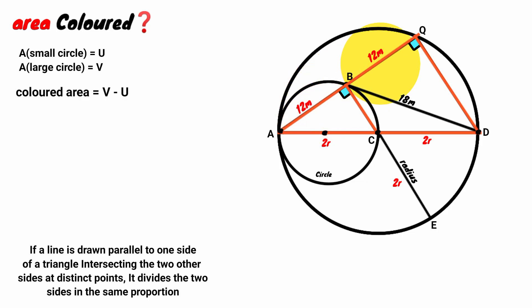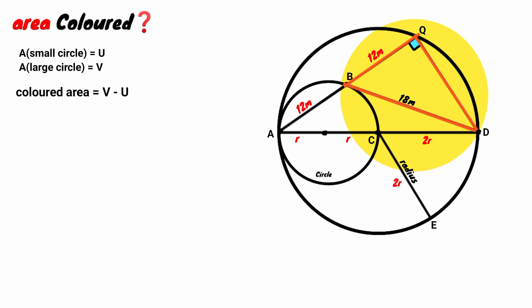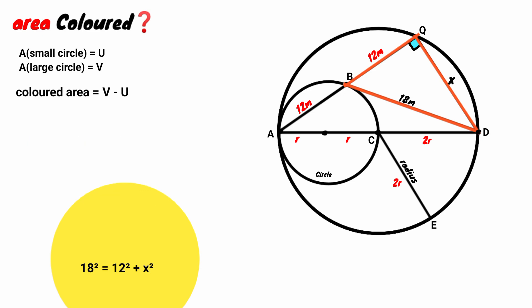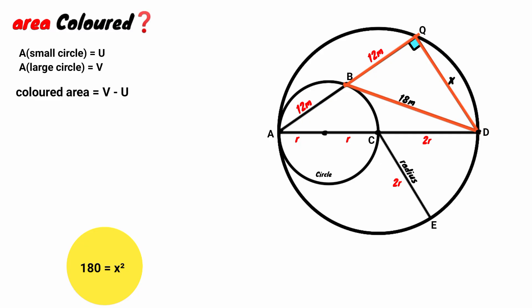Now look at this triangle — it is a right-angle triangle, and this side is the hypotenuse. Using the Pythagorean theorem, which states that the square of the hypotenuse equals the sum of the squares of the other two sides: 18 squared equals 12 squared plus x squared. 12 squared is 144. So 324 minus 144 is 180, giving x squared equals 180.